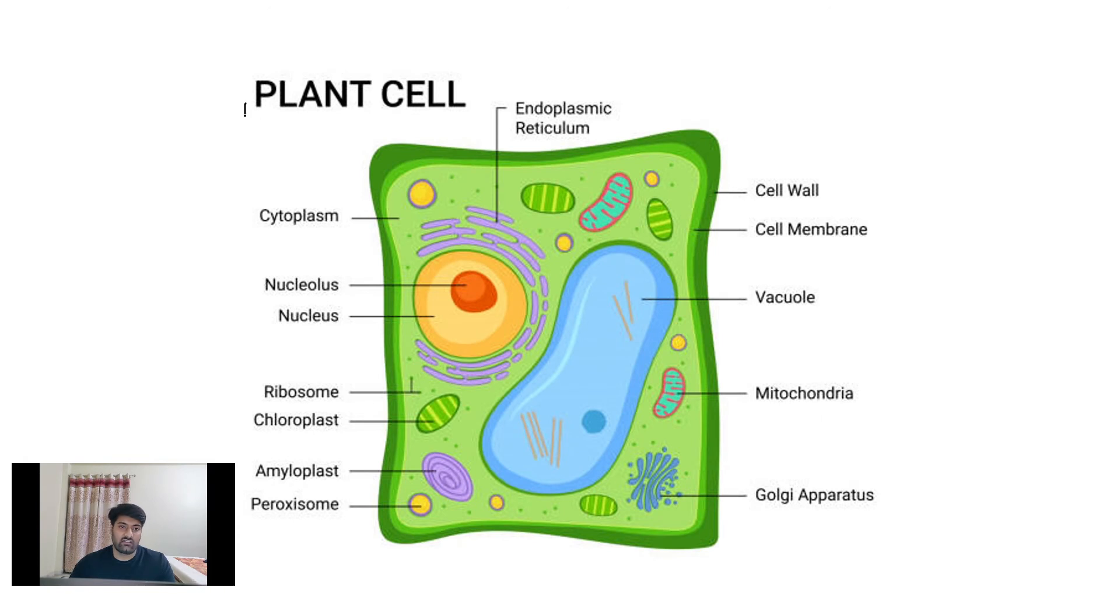Now moving on to the next slide, here we can see plant cells. Plant cells have many similarities to animal cells, like presence of cytoplasm, nucleus, ribosomes, mitochondria, Golgi apparatus and cell membrane. But plant cells also have some specialized structures, like cell wall, which is made up of cellulose and is present outside the cell membrane and provides rigidity to the plant cell.